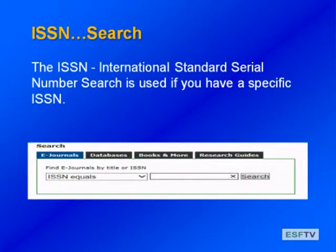The last search available is ISSN, which is used when you have the exact identification number for your serial — officially called the International Standard Serial Number. Sometimes you see that number listed in references, and it's a good way to get an exact match, but usually you'll be using the other three searches.